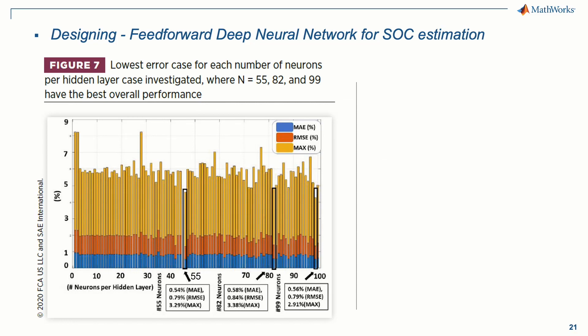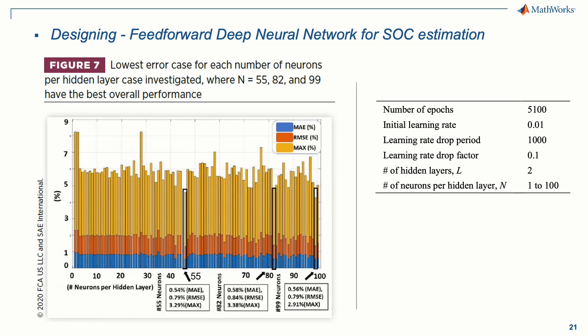In order to select the number of neurons for our model, we trained 100 models by varying the number of neurons in each hidden layer, as shown in Figure 7. The training parameters used in this selection are also shown here. Based on these results, the models with 55, 82, and 99 neurons presented very similar accuracy, which we'll discuss in the next slide.